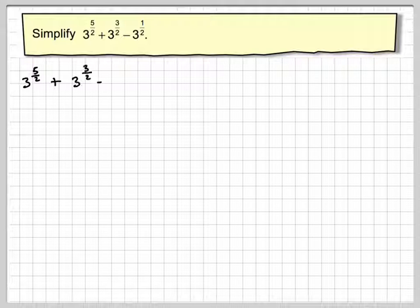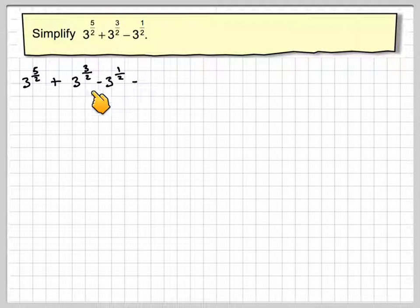Okay, so we've got 3 to the 5 over 2 plus 3 to the 3 over 2 minus 3 to the 1 half.